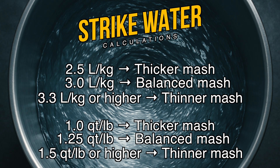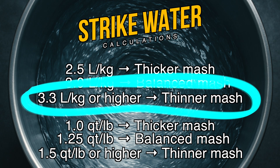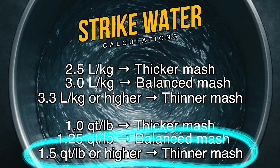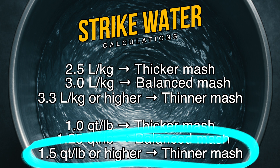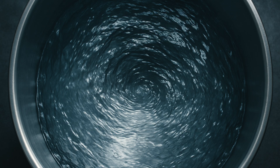I suggest experimenting with the balanced and thinner mash types to see which you prefer. Let's run through an example using the thinner mash ratio. Say you are brewing 5 kilos of grain — multiply that by 3.3 litres and you get 16.5 litres of mash water. For imperial brewers, say you are using 11 pounds of malt — multiply by 1.5 and you get 16.5 quarts of mash water. Easy stuff.